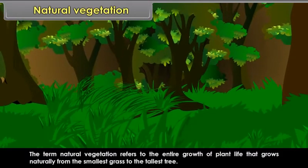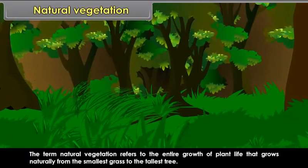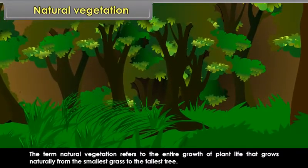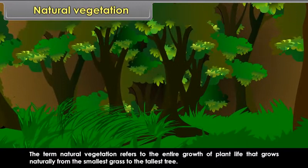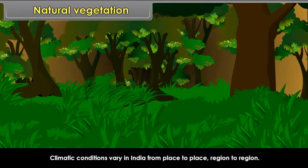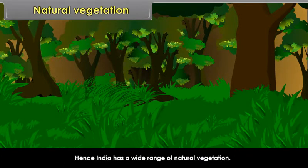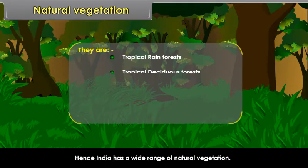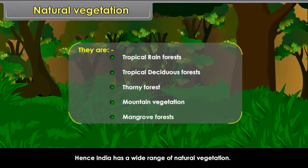The term natural vegetation refers to the entire growth of plant life that grows naturally, from the smallest grass to the tallest tree. Climatic conditions vary in India from place to place and region to region. Hence, India has a wide range of natural vegetation: tropical rainforests, tropical deciduous forests, thorn forests, mountain vegetation, and mangrove forests.